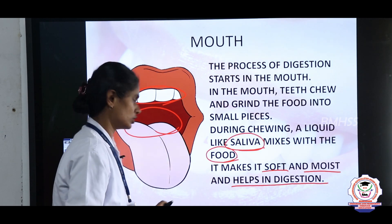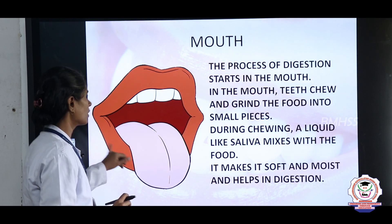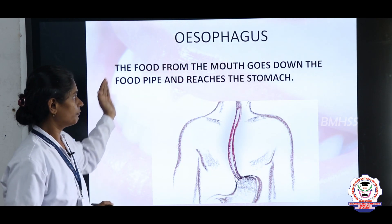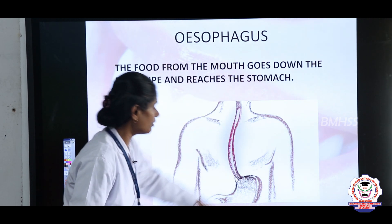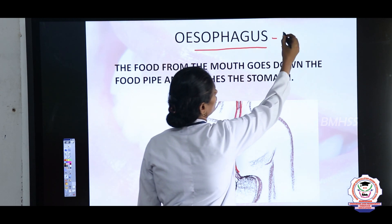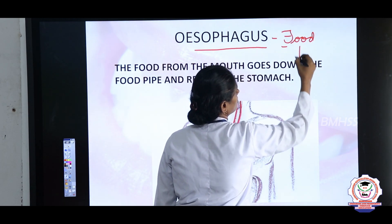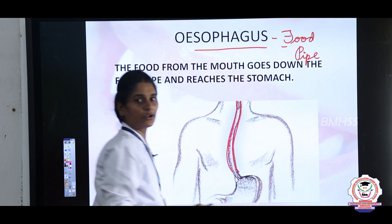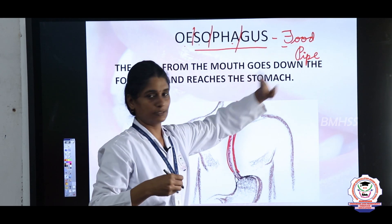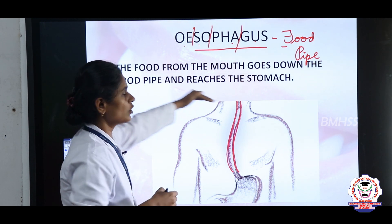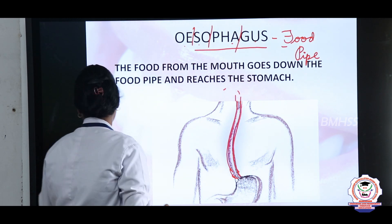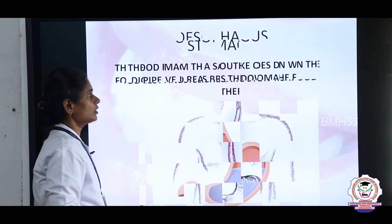After the mouth, the food travels down into your food pipe. This food pipe is also called the esophagus. The esophagus connects the mouth at the upper end and the stomach at the lower end, allowing food to travel from the mouth to the stomach.